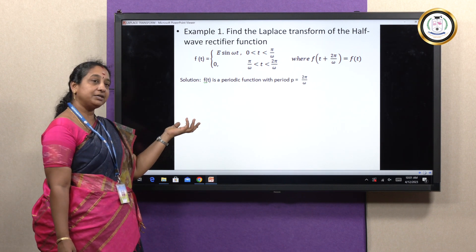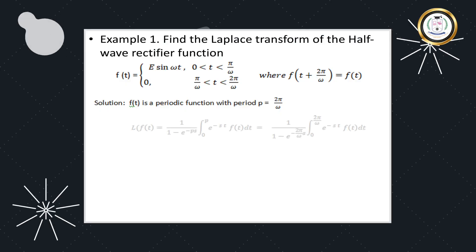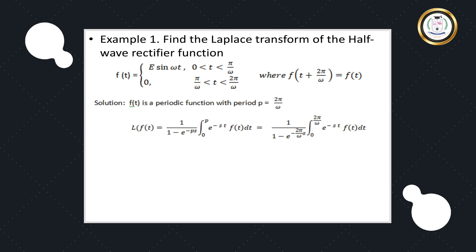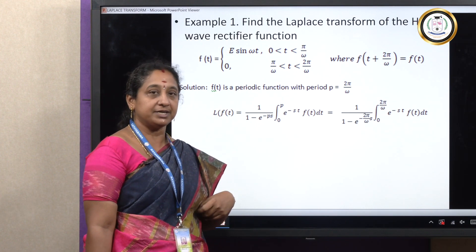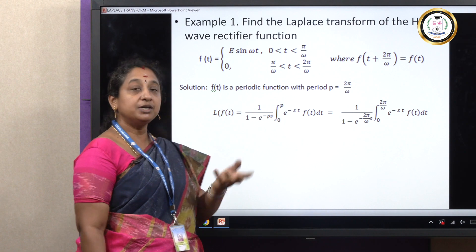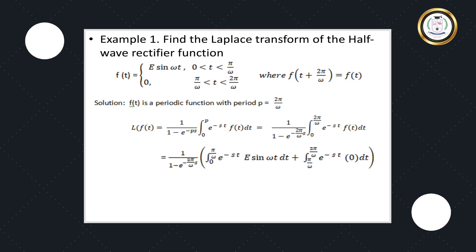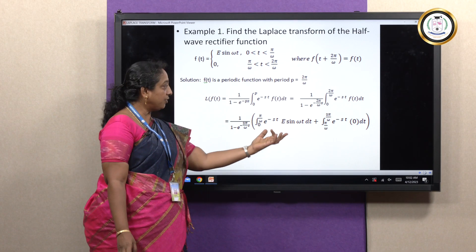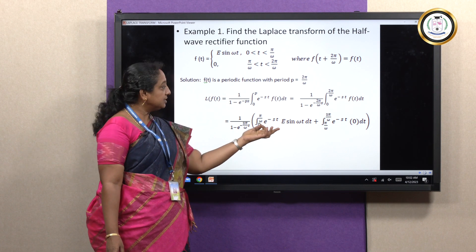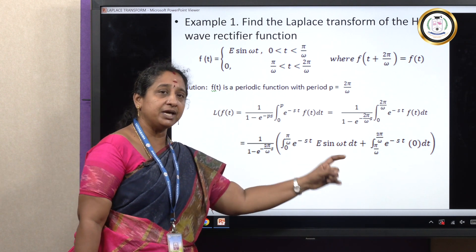To calculate the Laplace Transform, we replace p with 2π/ω in the formula. Since the function takes two different values over 0 to 2π/ω, we split the integral into 0 to π/ω and π/ω to 2π/ω. The second half vanishes (f(t) = 0 there). We then integrate E·e^(−st)·sin(ωt) dt over 0 to π/ω.